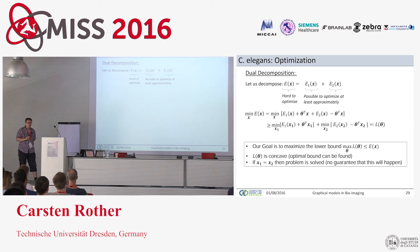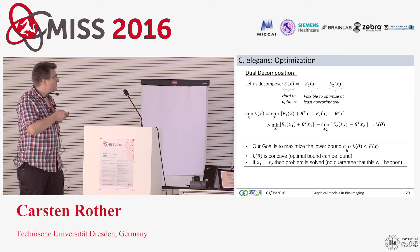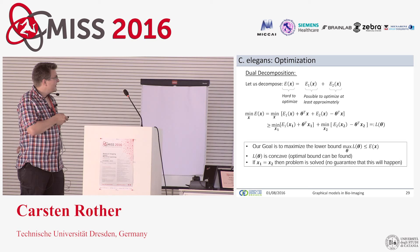So I now introduce dual decomposition, a very generic and useful technique. The idea is: we have a hard-to-optimize problem and we split it into two easier-to-optimize sub-problems. We want to minimize energy E, which we write as E1 plus E2 minus a dual variable theta - a vector the same size as x. Adding and subtracting theta, solving the two sub-problems independently gives a lower bound on the original problem.